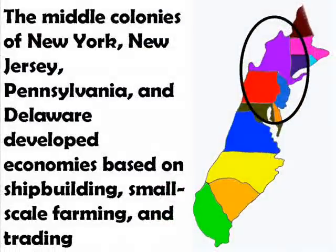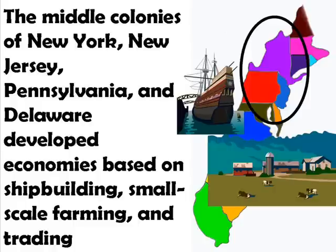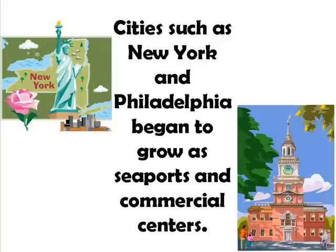The middle colonies of New York, New Jersey, Pennsylvania, and Delaware developed economies based on shipbuilding, small-scale farming, and trading. Cities such as New York and Philadelphia began to grow as seaports and commercial centers.